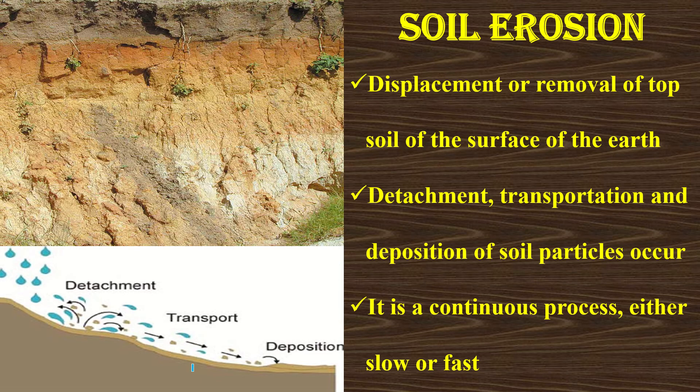Now we will talk about what erosion is. If we consider the term from the perspective of earth science, erosion is the action of surface processes that removes or displaces soil, rock, or dissolved material from one point on the earth's surface or crust, and then transports and deposits the same to some other location.